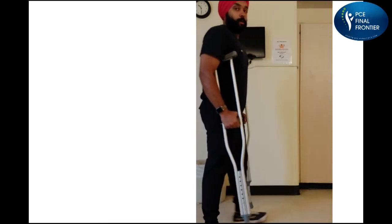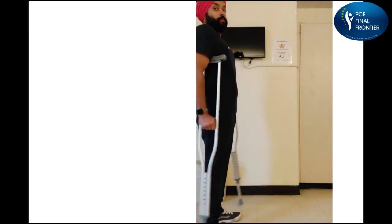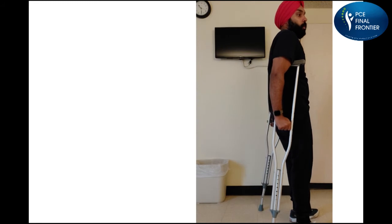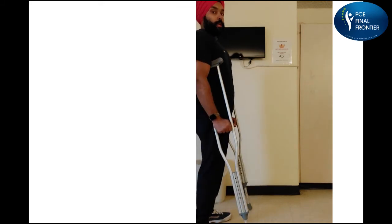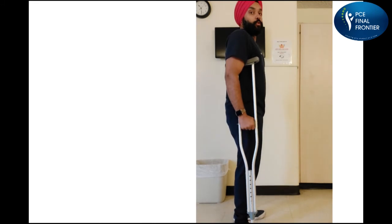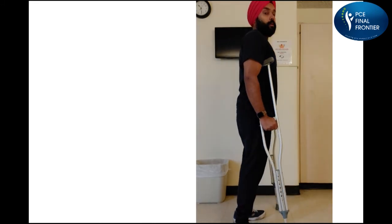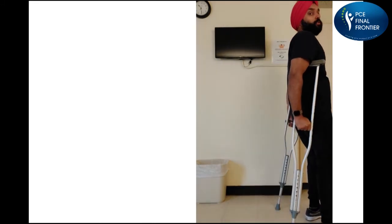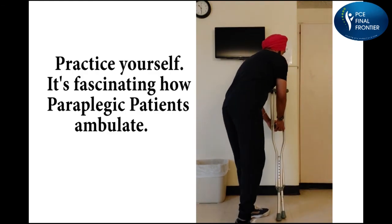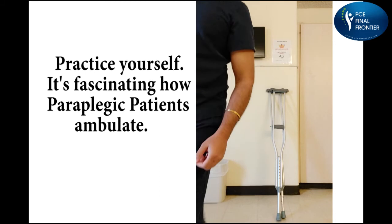So while standing like this I'm going to swing forward — that was the swing-through gait pattern. Now for swing-to: you swing to the crutches, and for swing-through: you swing through the crutches. These are called swing-to and swing-through gait patterns. I hope it helps!